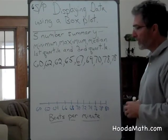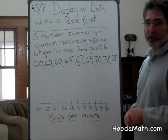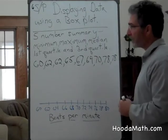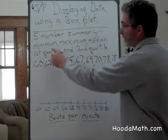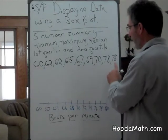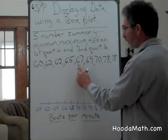Before we make a box plot, we need to make a five-number summary. Here's our data. The five-number summary includes the minimum, the maximum, the median or middle number,